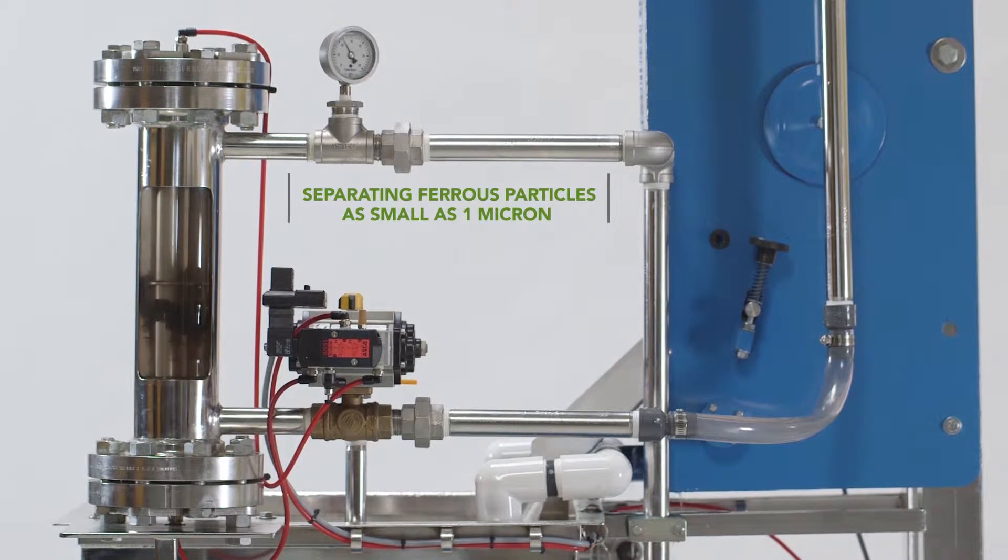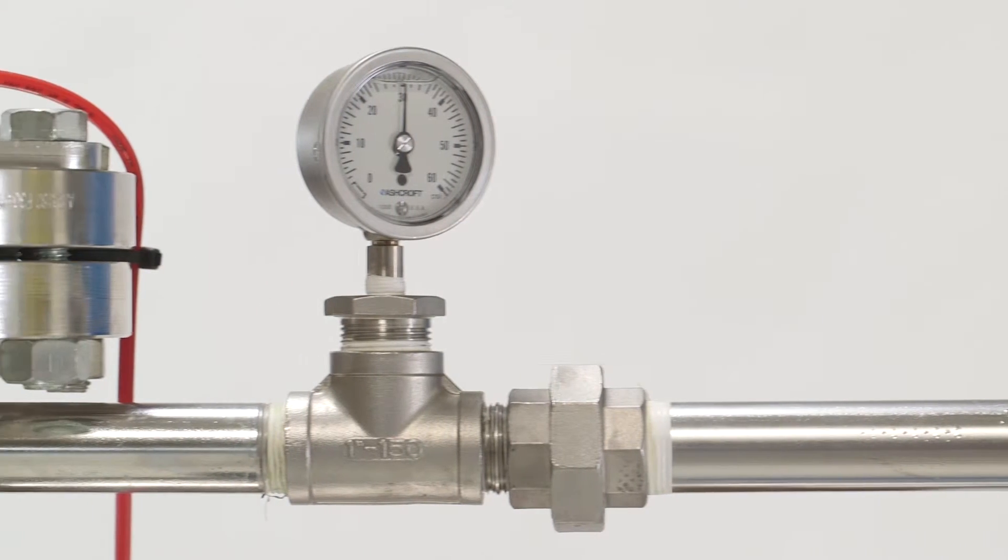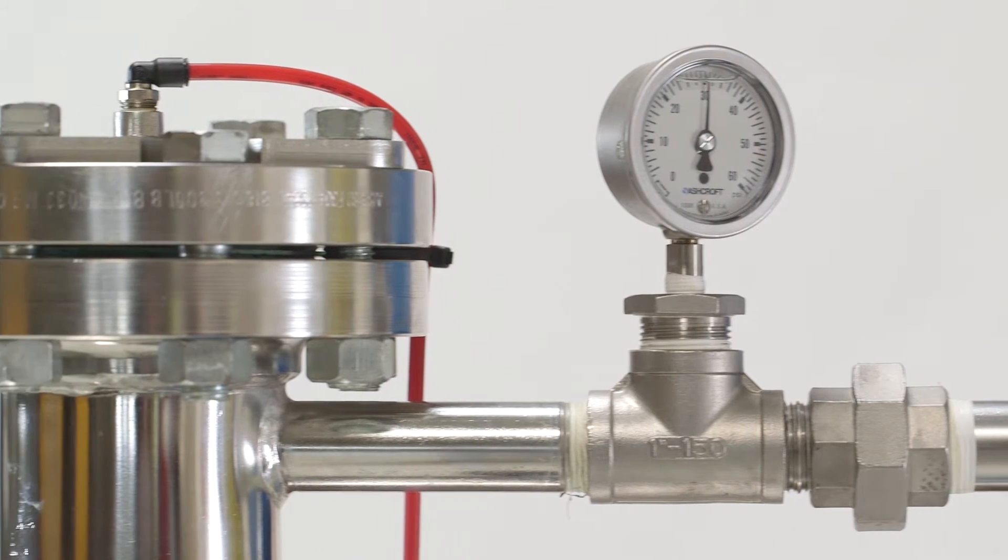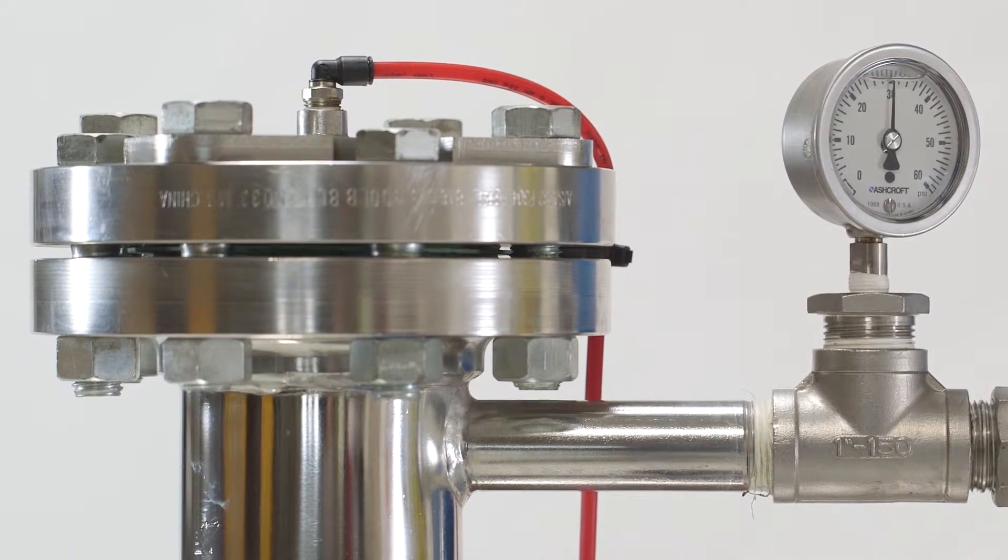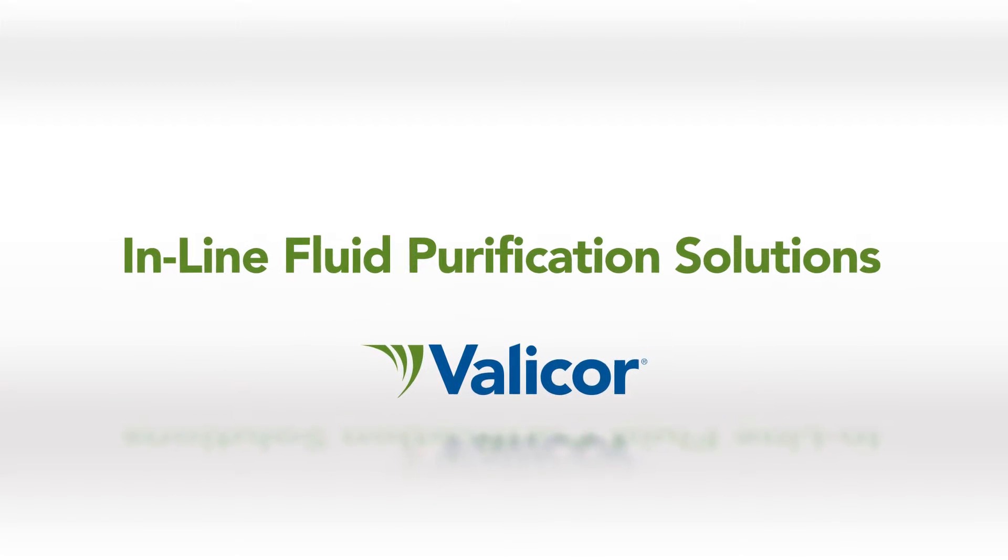Separating ferrous particles as small as 1 micron from process fluids during heavy flow and losing almost no fluid is an issue. But using proprietary high-powered rare-earth magnetic technology, there is a solution.